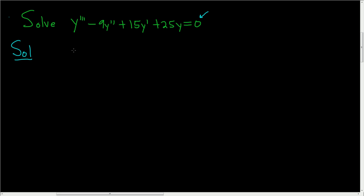We'll start by writing down the characteristic equation. Because we have the third derivative of y here, we'll write down m cubed, and then minus 9. Here we have the second derivative, so that's m squared, and then plus 15. Here we have the first derivative, so that's m, and then here we have the zeroth derivative, or just y, so 25. And this is equal to 0.